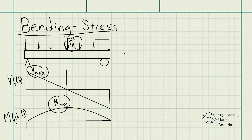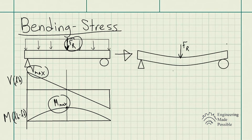Let me go ahead and draw the beam in reality. In statics we assumed beams were rigid and did not deform, but in reality they will actually deform a bit. This is how the beam will look — it will actually deform due to that resultant force.